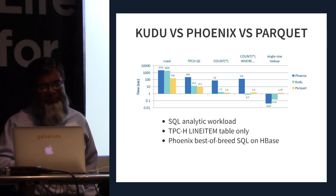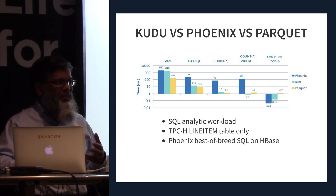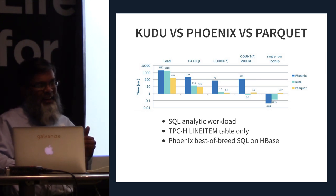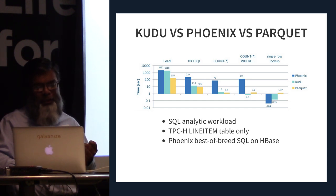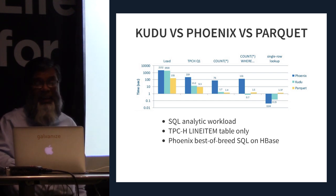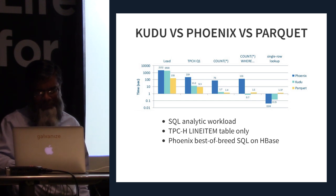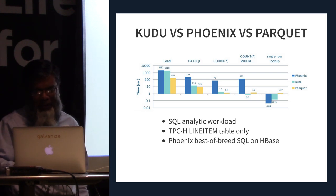This chart compares Kudu against Phoenix — the fastest SQL you can get on HBase, written by Salesforce and now an Apache project — and against Parquet on HDFS using Impala. Phoenix and Kudu have about the same performance; in some cases Kudu is actually slightly better. Parquet is significantly better on SQL-like processing, but Kudu is actually comparable to Parquet in most of these cases.